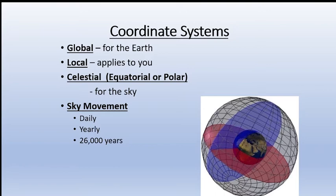Before describing coordinate systems, let me provide insight into the motions of the Earth. There is a daily motion — rotation — and a yearly motion — revolution. There is also a very subtle, long-duration motion taking about 26,000 years, which is the precessional or top-like motion. We will focus mainly on the daily and yearly motions and the effects arising from them.